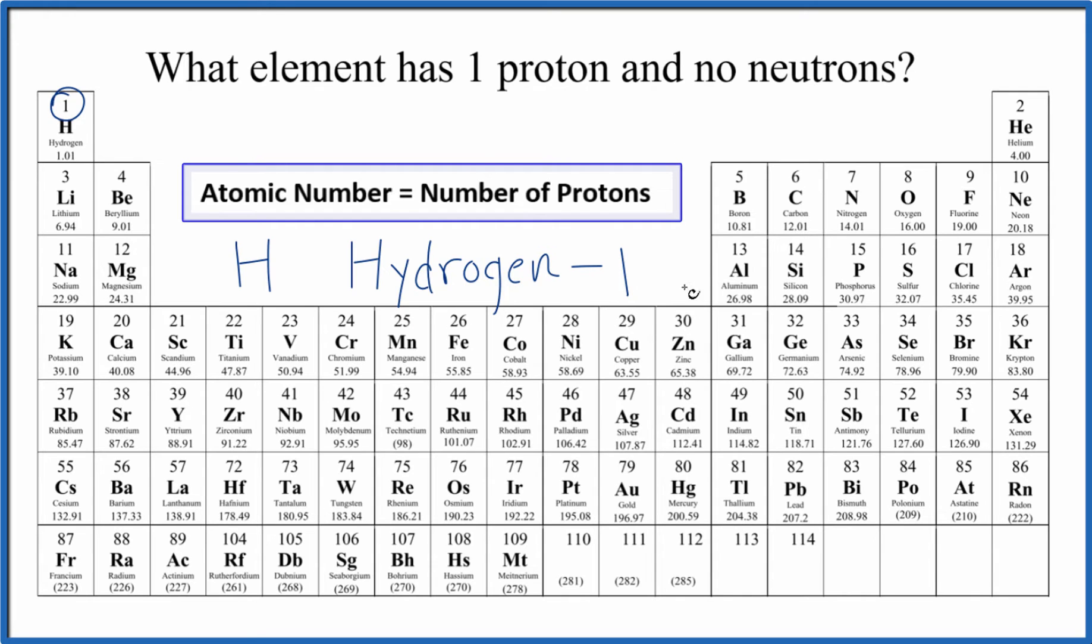It's also called protium, which has a special name. You do have hydrogen that has neutrons, like hydrogen-2, that's deuterium, and hydrogen-3 would be tritium. But in this case, we're talking about hydrogen-1, protium, because we have one proton and no neutrons.